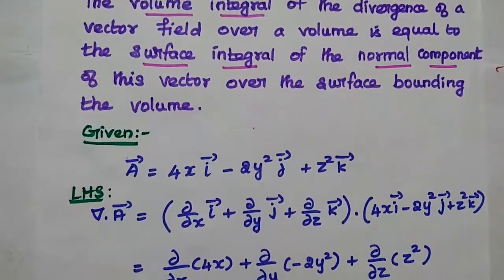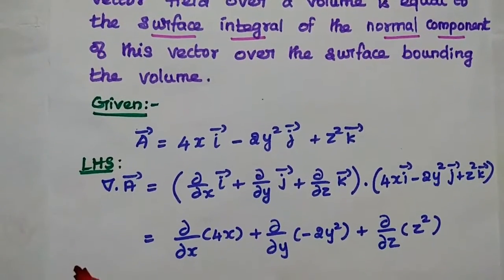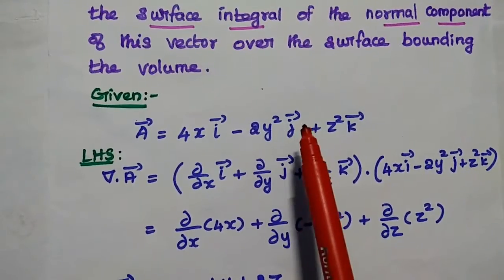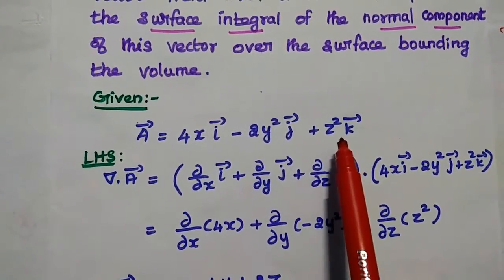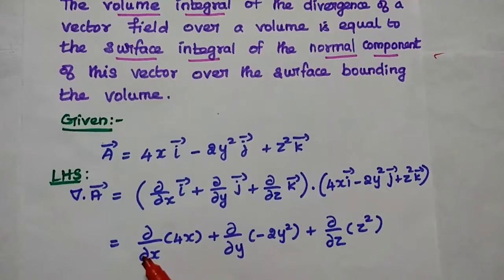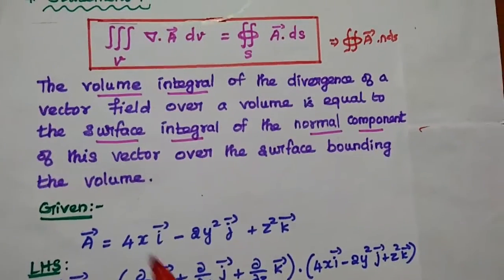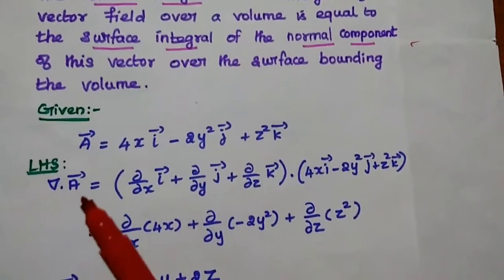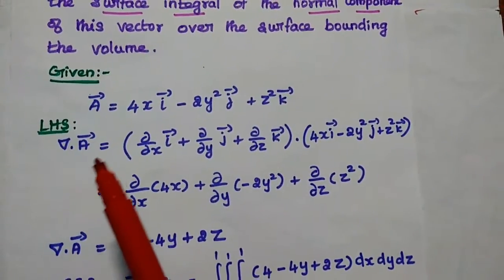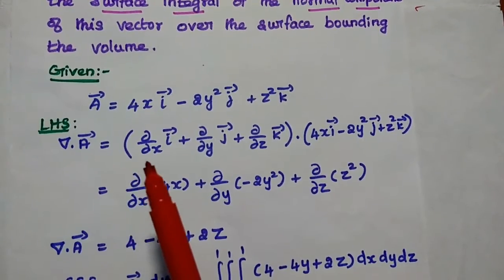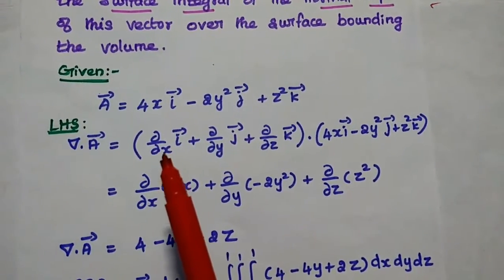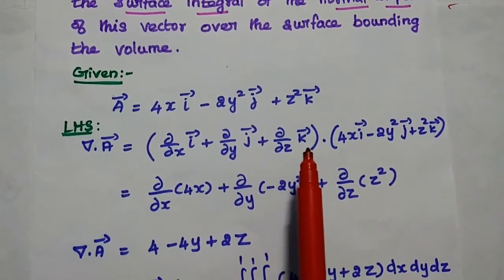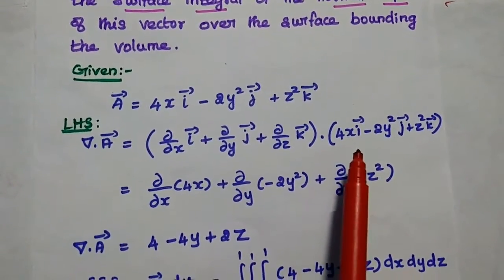Next, we are going to verify the divergence theorem for the given vector A = 4x i-vector minus 2y² j-vector plus z² k-vector. First, we take the left-hand side of the divergence theorem, that is the volume integral of the divergence of the given vector. The divergence del·A equals the del operator (∂/∂x i + ∂/∂y j + ∂/∂z k) dotted with the A vector.